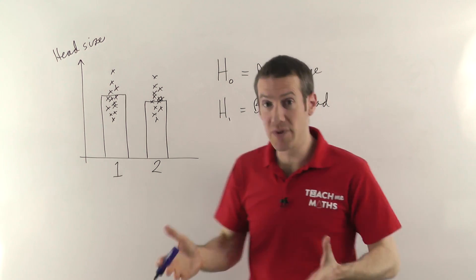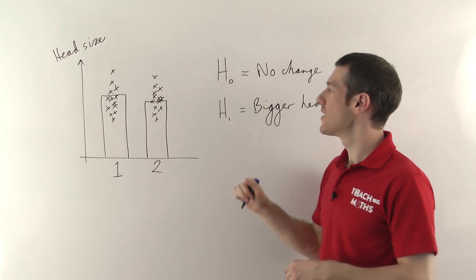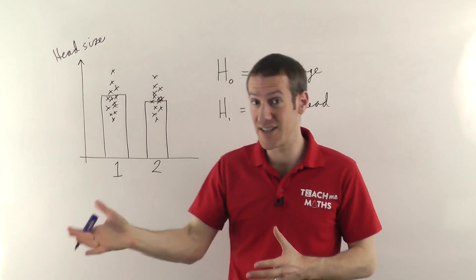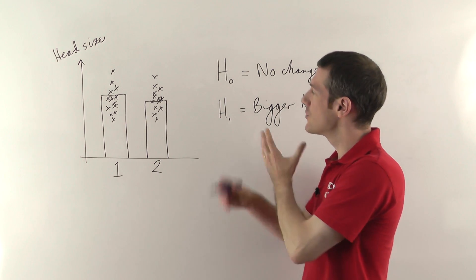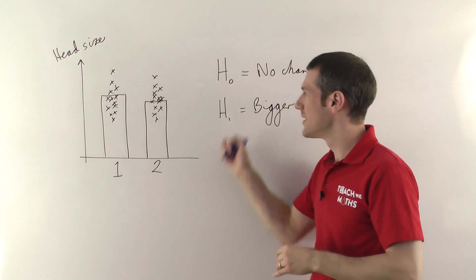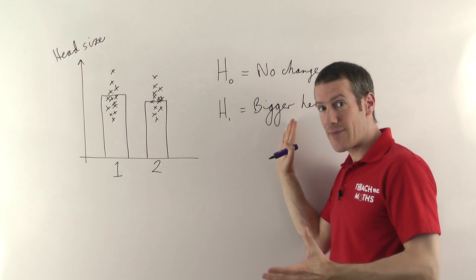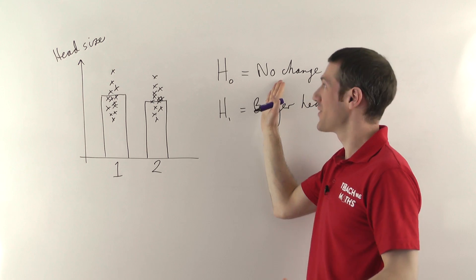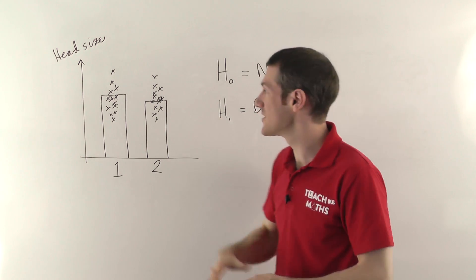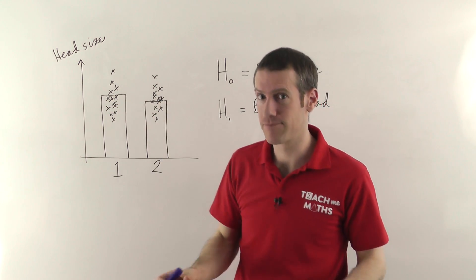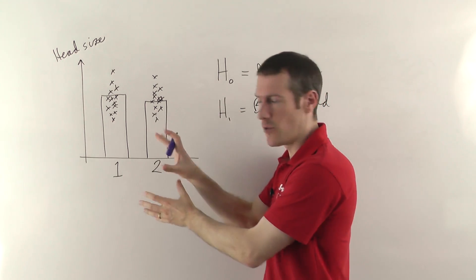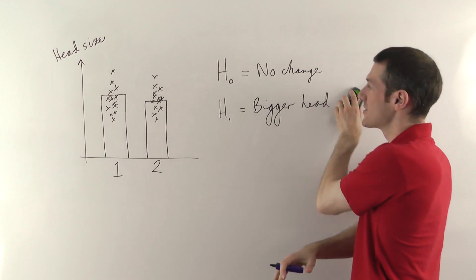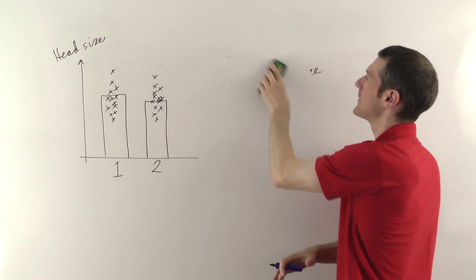Generally, like with the normal distribution, if you're doing hypothesis testing you postulate some hypothesis, do the test, work out the statistics — it might be the Z statistic if you're using a normal distribution — and you compare it with different confidence levels to see whether or not you have enough evidence to accept the alternative hypothesis, or whether you need to stick with the null hypothesis, which says the change was just due to chance. That's the general idea, and specifically for a t-test, your hypothesis is comparing the means.